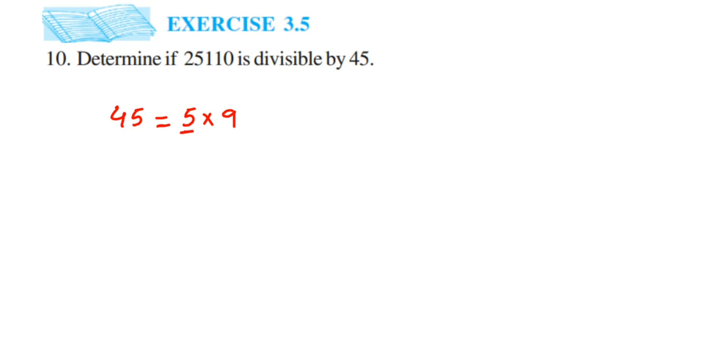If 5 and 9 can divide this number, we're going to check the next rule after this. Now, 25110 is divisible by 5. Why is it divisible by 5? Because you can see the number is ending with 0. Any number which ends with 0 or 5 is divisible by 5.